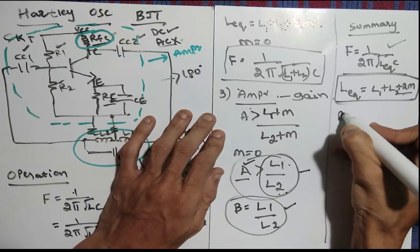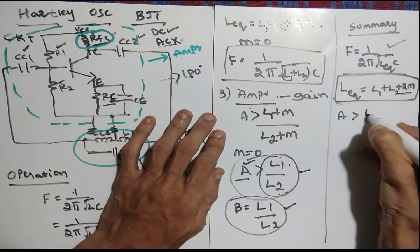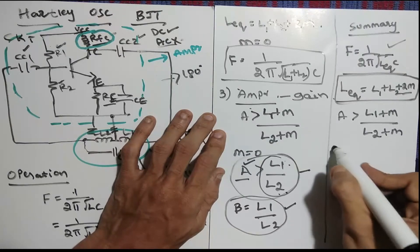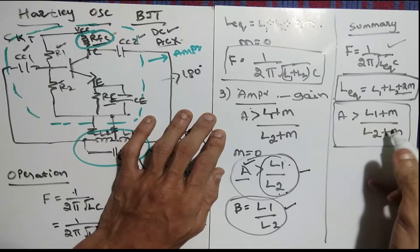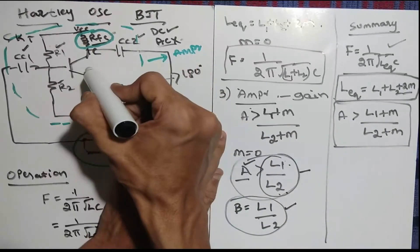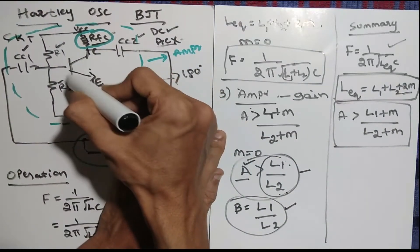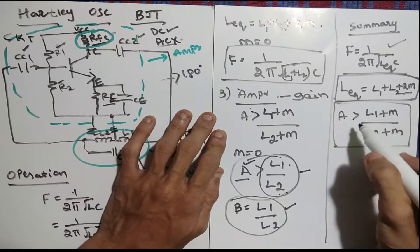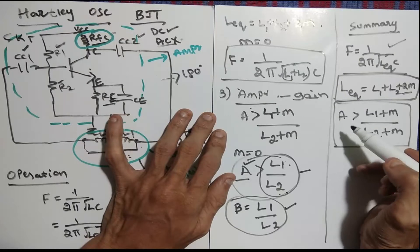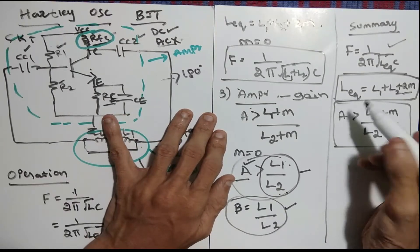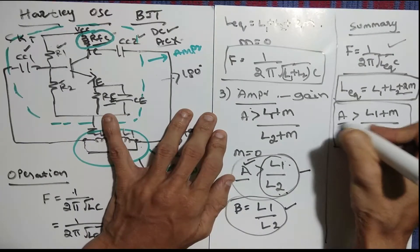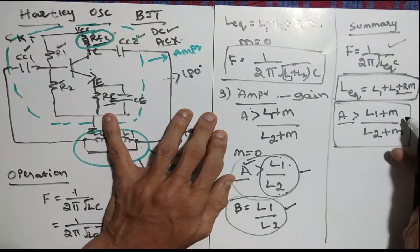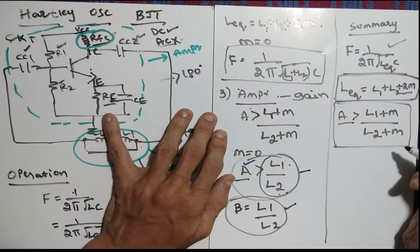For the amplifier portion, the formula is: gain A must be greater than (L1 plus M) divided by (L2 plus M). In our case, the gain is using a BJT, so whatever gain we have for the BJT should satisfy this condition. In BJT, the gain is known as beta, which is the current gain. So beta should be greater than (L1 plus M) divided by (L2 plus M).